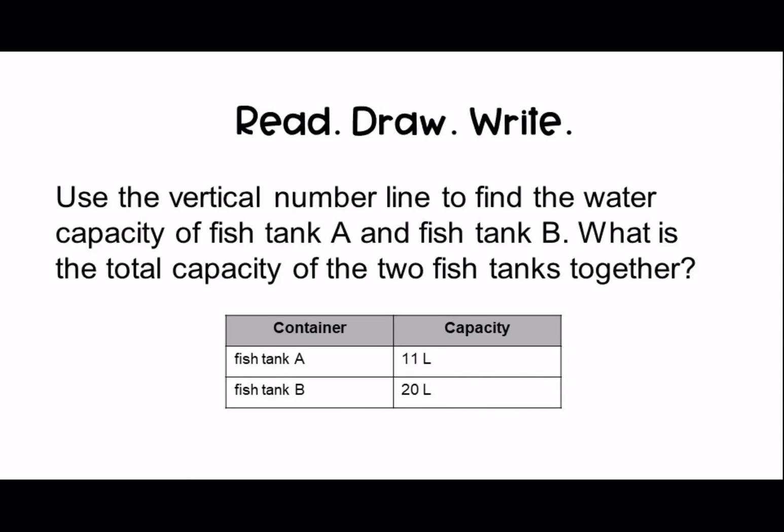Let's try our read draw write question. Here's the question: use the vertical number line to find the water capacity of fish tank A and fish tank B. What is the total capacity of the two fish tanks together?